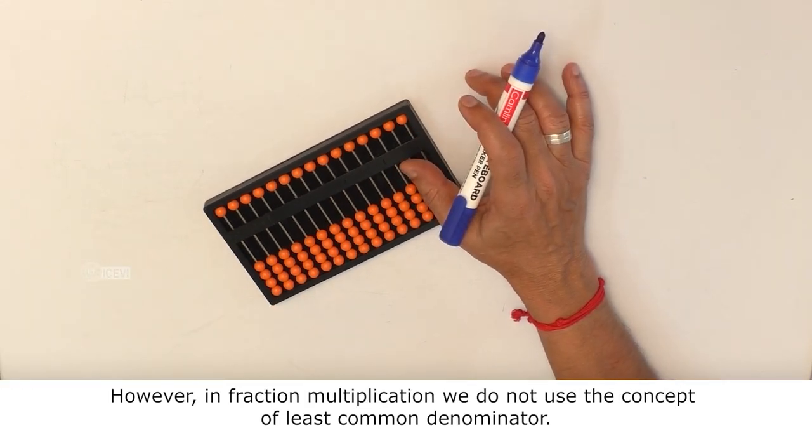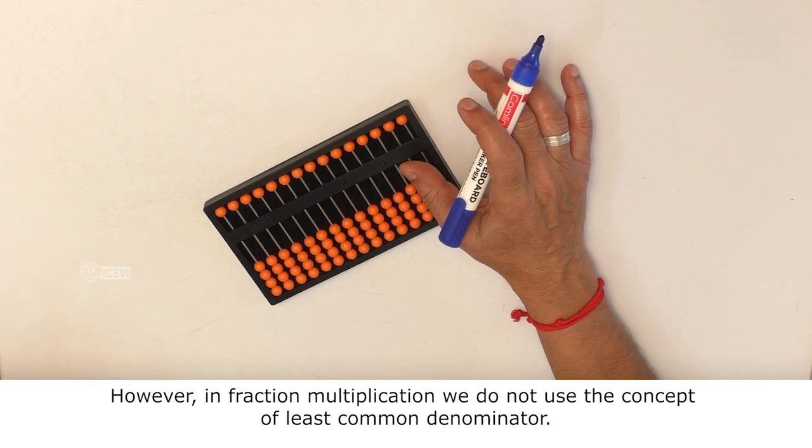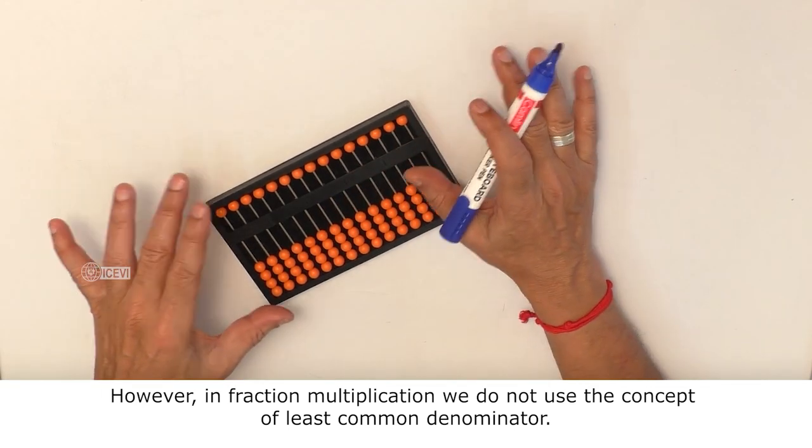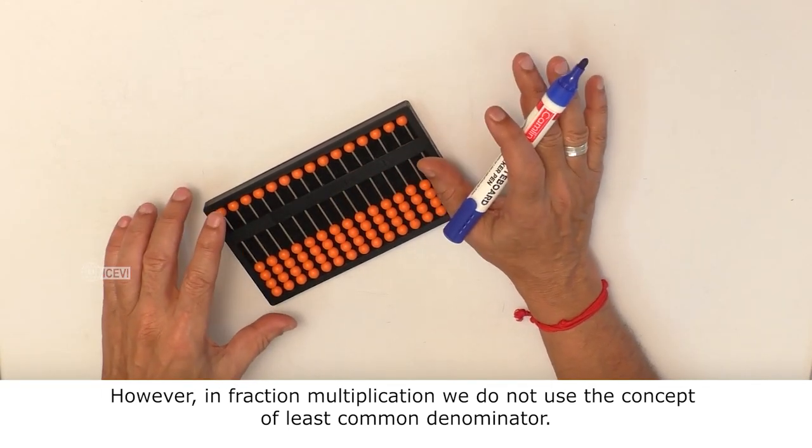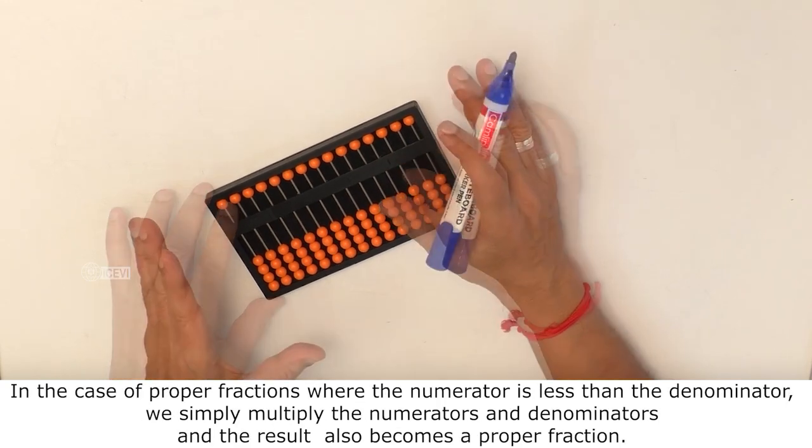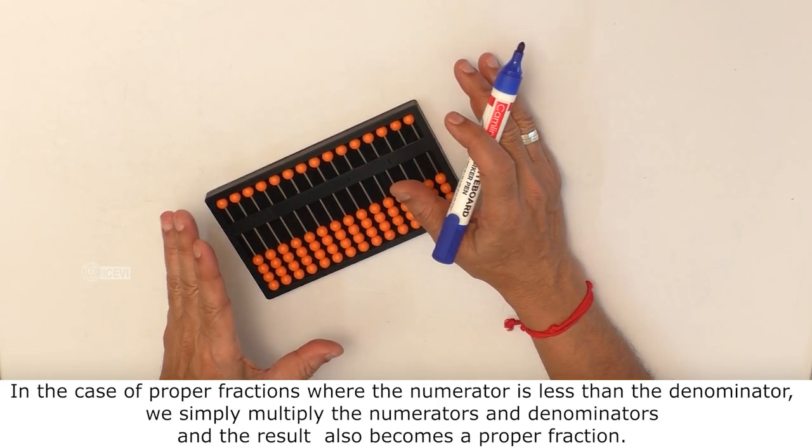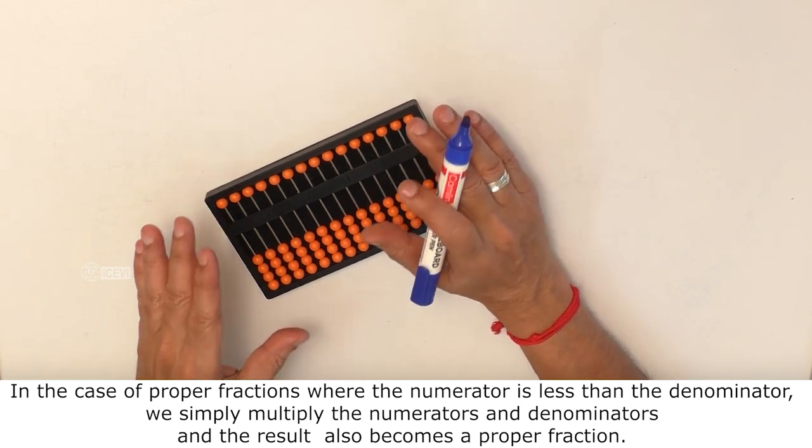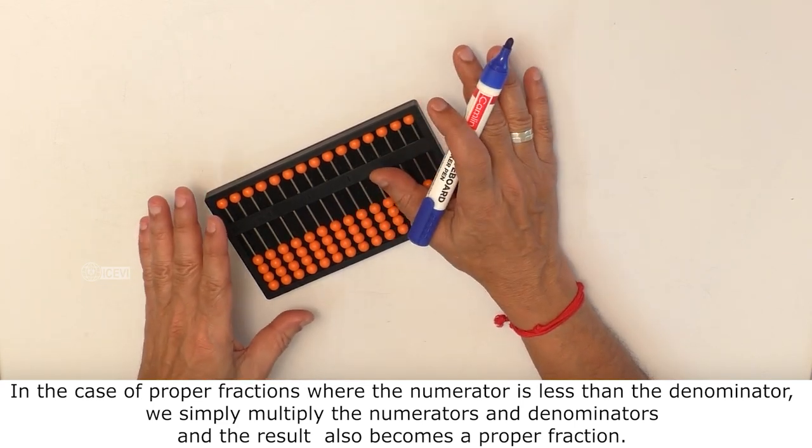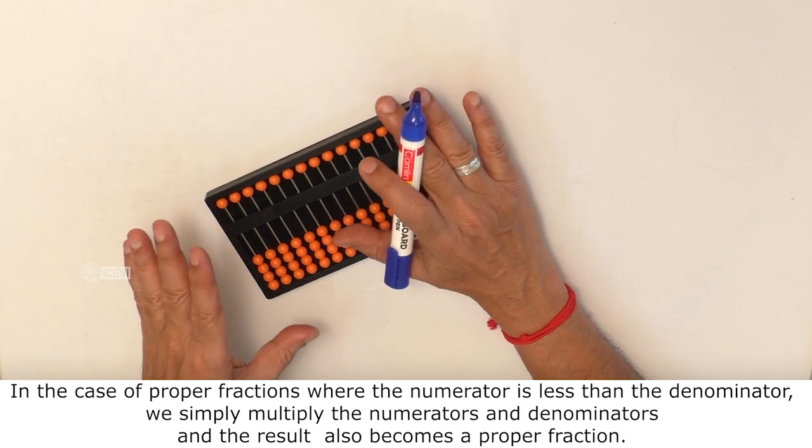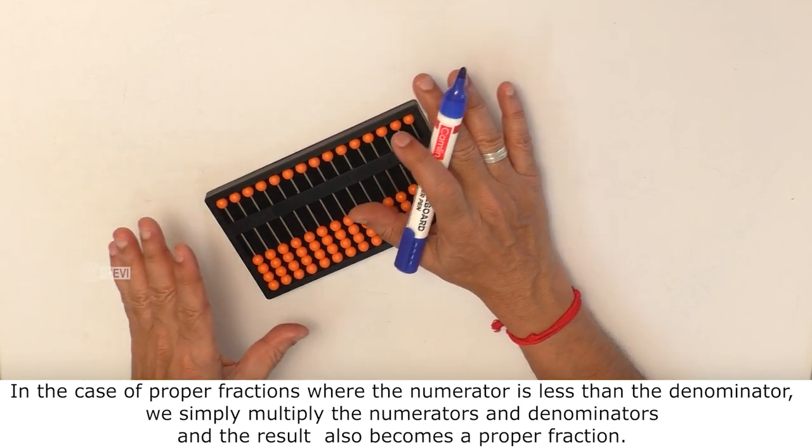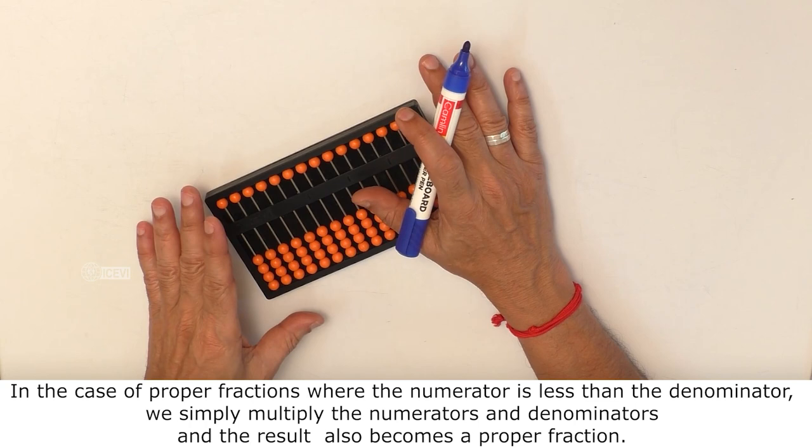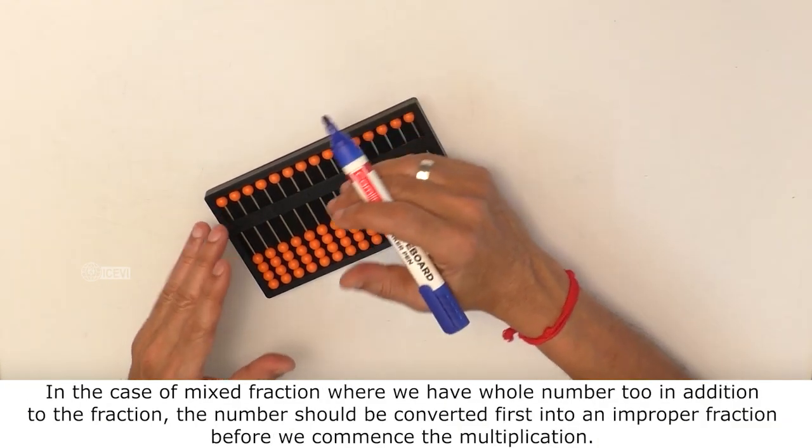However, in fraction multiplication, we do not use the concept of least common denominator. In the case of proper fractions, where the numerator is less than the denominator, we simply multiply the numerators and denominators and the result also becomes a proper fraction.